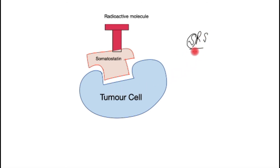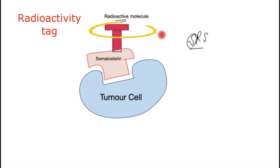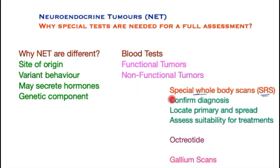Somatostatin is also the basis that allows somatostatin and related products to be used in treatment. When somatostatin attaches to a tumor cell, it is bonded to a radioactive molecule, and a gamma camera is used to image the whole body and identify where the activity is most focused. This allows confirmation of diagnosis, location of the primary tumor and its spread, and assessment of suitability for treatments by confirming that receptors exist on the tumor.